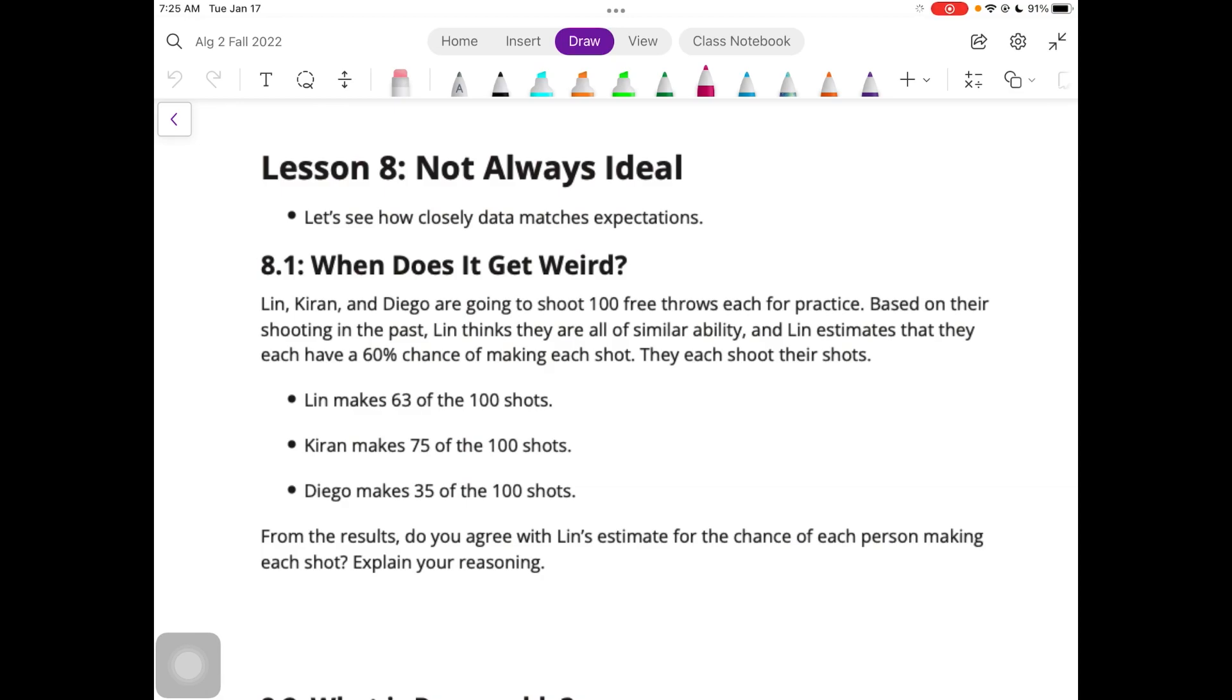From the results, do you agree with Lynn's estimate for the chance of each person making each shot? Explain your reasoning. So you could say yes, because each person was supposed to make 60 shots. Lynn was pretty close. Maybe Kieran was having a really good day. Maybe Diego was having a really bad day.